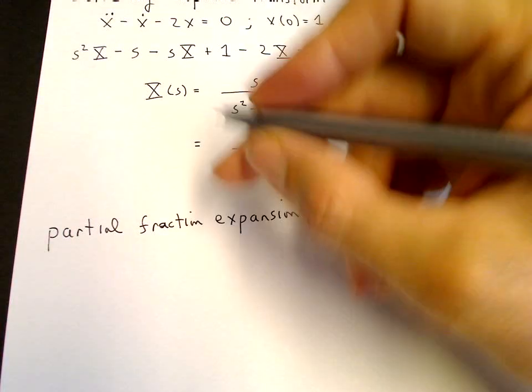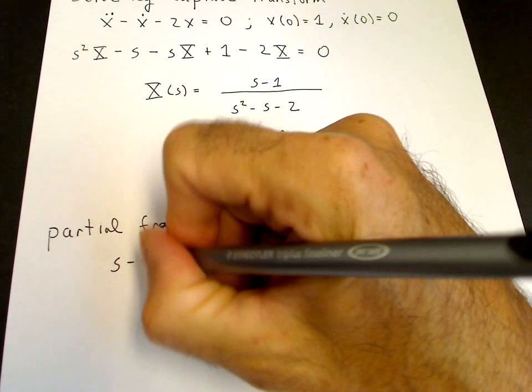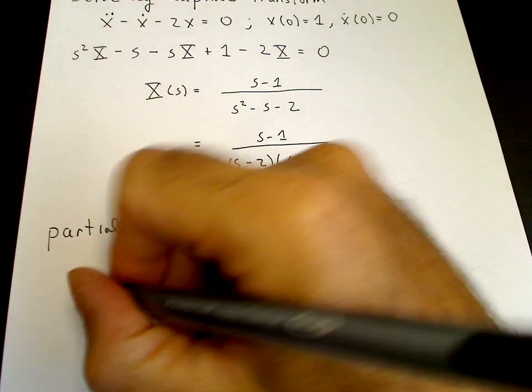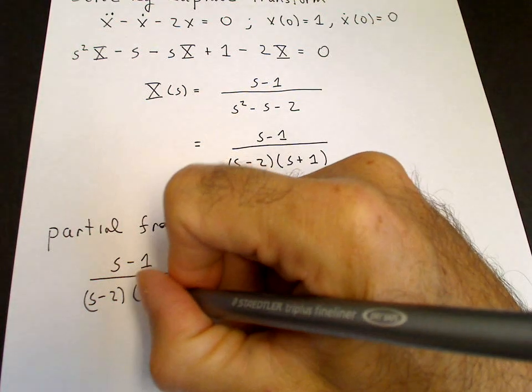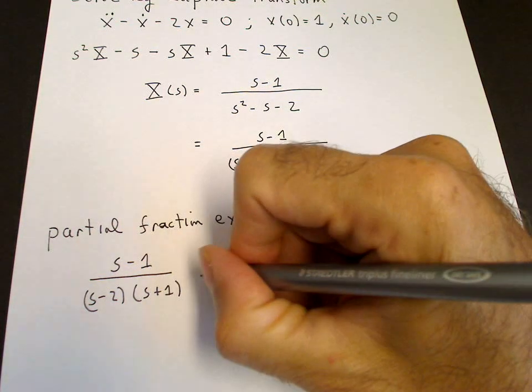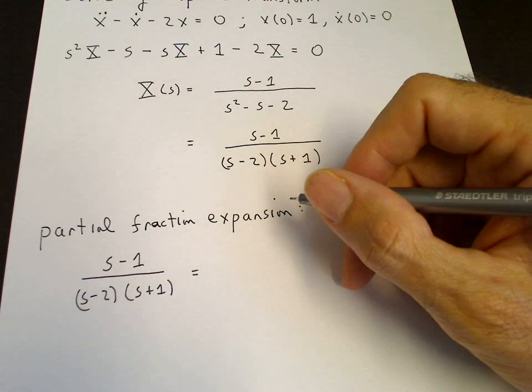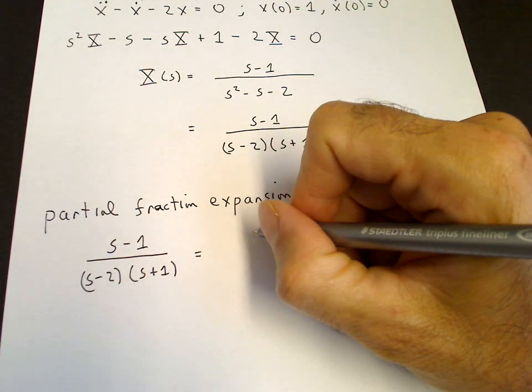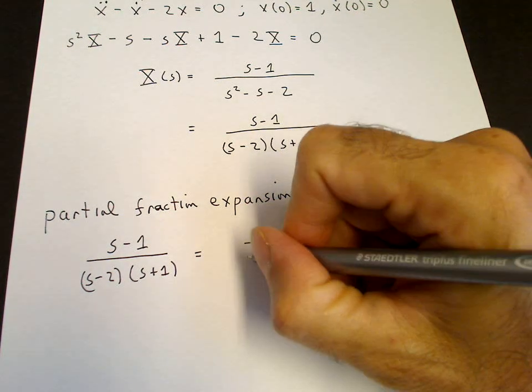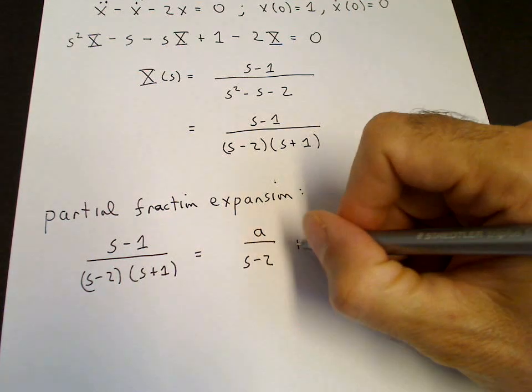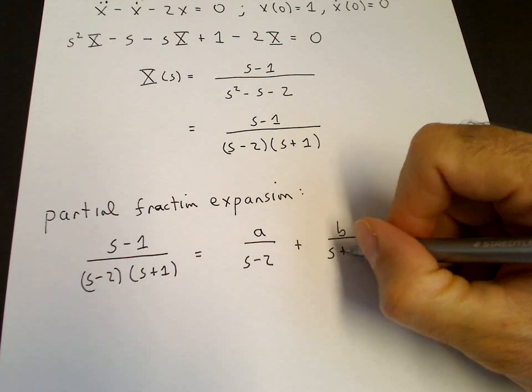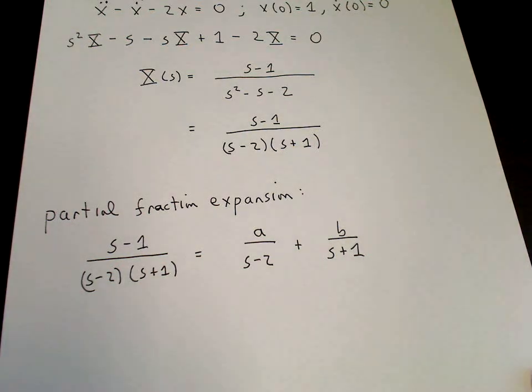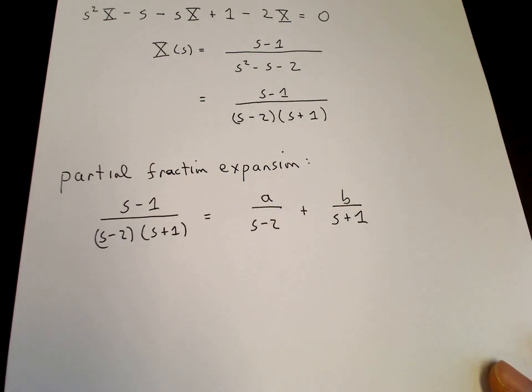So we write S minus 1 over S minus 2 times S plus 1 as two terms, A over S minus 2 plus B over S plus 1. And we want to determine A and B.